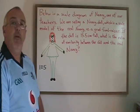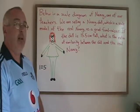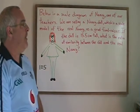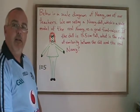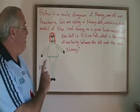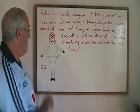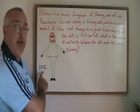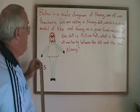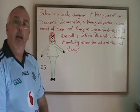If the doll is 15.5 centimeters tall, what is the ratio of similarity between the doll and the real Nancy? We already know the height of the doll. If we could find the height of the real Nancy, all we'd have to do is put those two numbers together and we would find our ratio of similarity. But we don't know the height of the real Nancy — not yet. We can find it using this scale diagram and the 1 to 5 scale. I measure the height of Nancy in the diagram and get 31 centimeters.